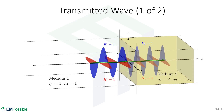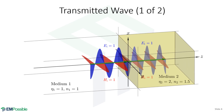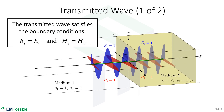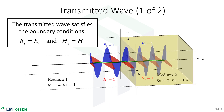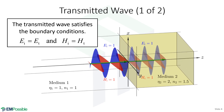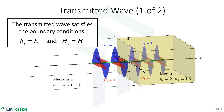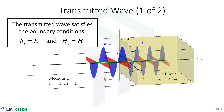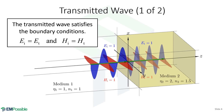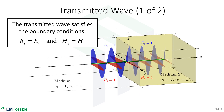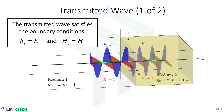One thing we can do to figure out what the wave on the other side looks like is think about our boundary conditions. Our boundary conditions need the electric and magnetic fields on the left side of that interface to be equal to the electric and magnetic fields on the right-hand side of the interface. So our boundary conditions mathematically are EI equals ET and HI equals HT. We can watch the fields at the interface, and we can see that they are continuous going across the interface.